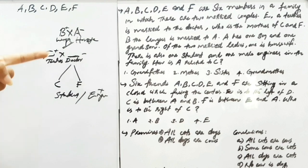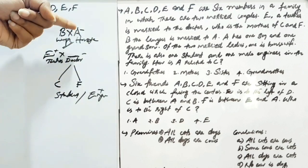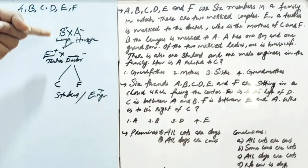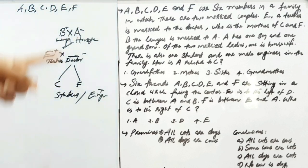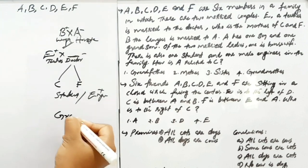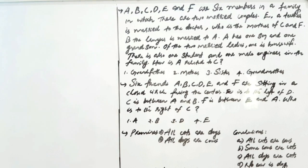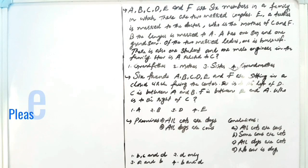This is the second generation and grandparent generation. A is a female. A is a grandmother. That is the correct answer — A is the grandmother of C.